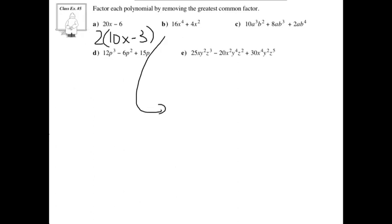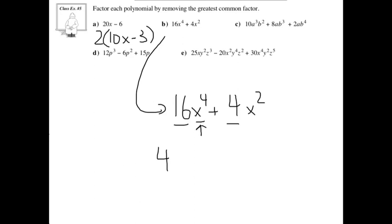Next up we've got b, which is 16x to the power of 4 plus 4x to the power of 2. Let's take a look at 16 and 4 — the greatest common factor between them both would be 4. Then let's look at the x's: we've got x to the power of 4 and x to the power of 2. At the very least, each one of them has x to the power of 2, so we're going to pull out x to the power of 2 as well.